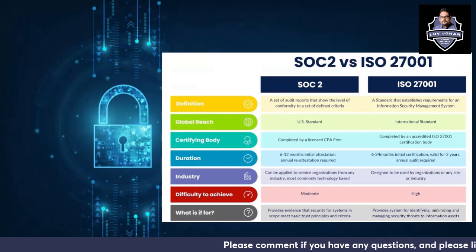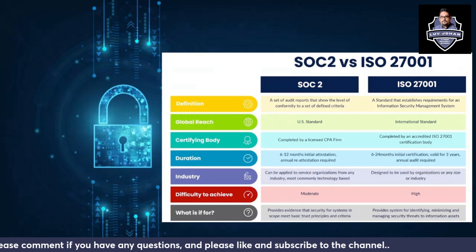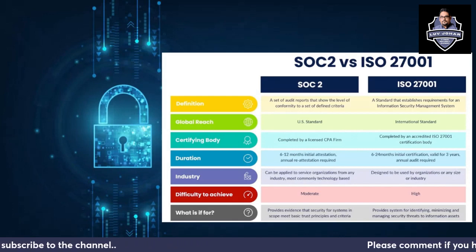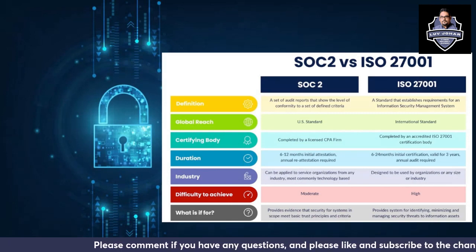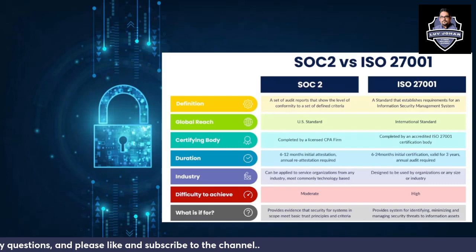SOC 2 is a US standard while ISO 27001 is an international standard. The certifying body for SOC 2 is a CPA firm, while ISO 27001 uses an ISO certification body. Duration is important: SOC 2 takes 6 to 12 months for initial attestation, with annual attestation required. ISO 27001 is valid for 3 years, with an annual audit also required.